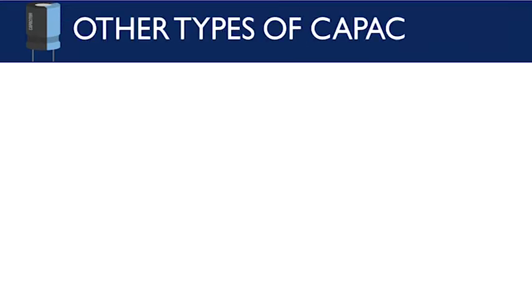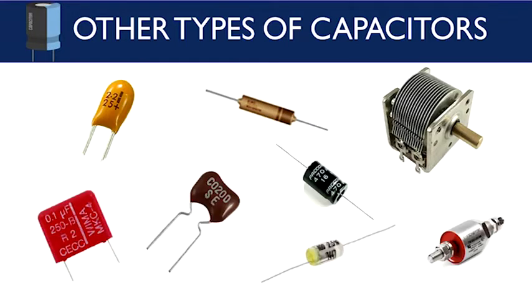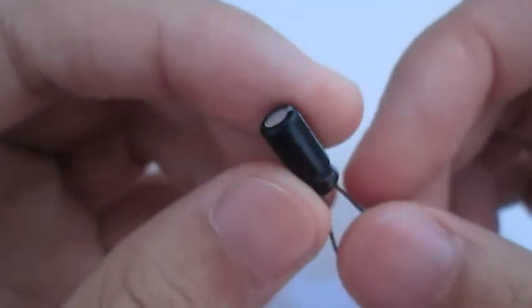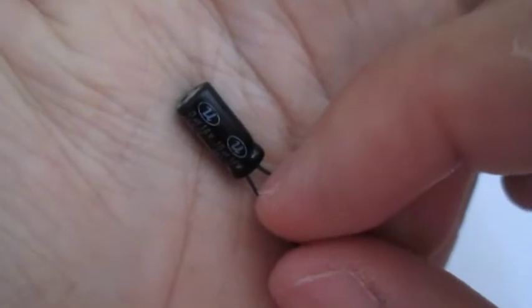There are other types of capacitors, including the tantalum capacitor, paper capacitor, variable capacitor, and a lot more. If you want to know all the types, I've also pasted links in this video's description. Now basically, the role of any capacitor is to store energy in the form of electrical charge.